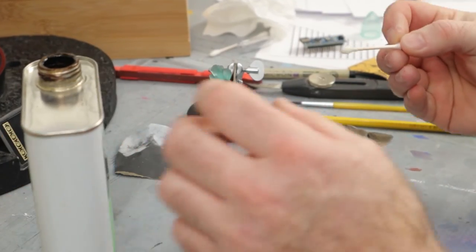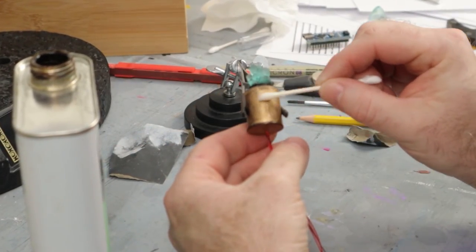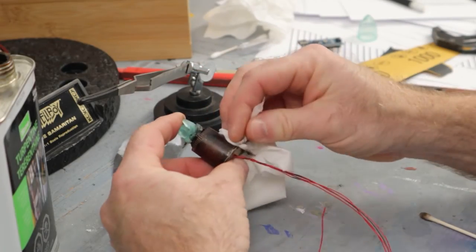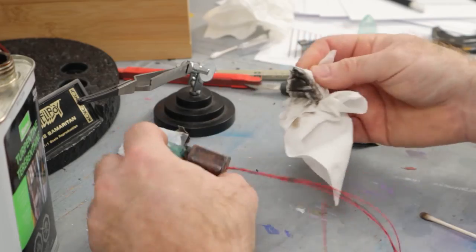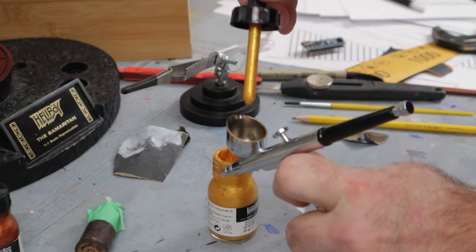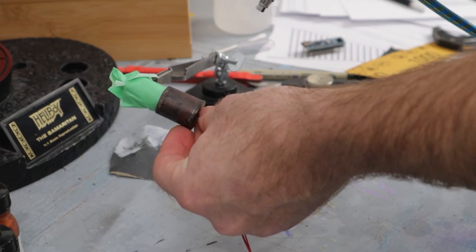This is where I decided the Rub'n Buff has to go. It doesn't hold up to handling and I didn't like the look of it, so I decided to remove it with some turpentine. I don't have any good brass colored paint, so I'm going to mix these two Liquitex colors, gold and copper. I've masked off the crystals with some tape.